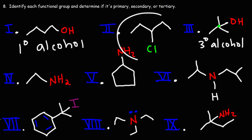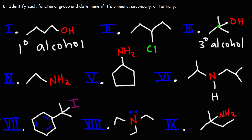What functional group is represented by number two? Chlorine is a halogen. When you have a halogen attached to an alkane, it's called an alkyl halide. Is this a primary, secondary, or tertiary alkyl halide? This depends on the carbon to which the halogen is bonded. This carbon atom is attached to two other carbon atoms, which means we have a secondary alkyl halide.